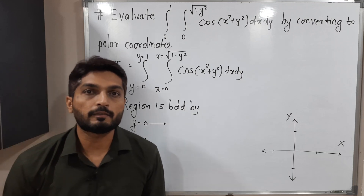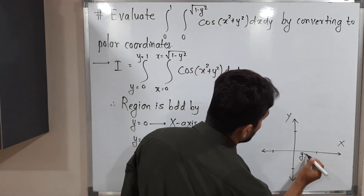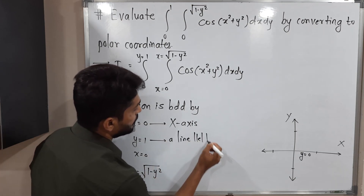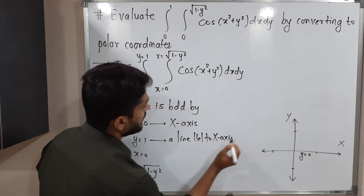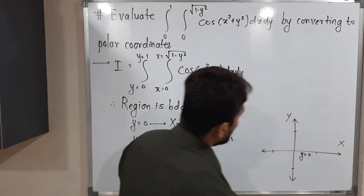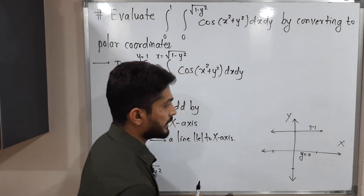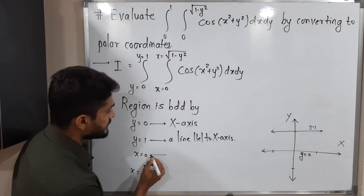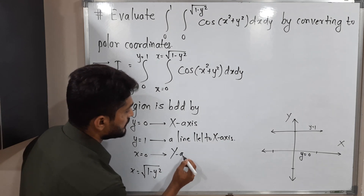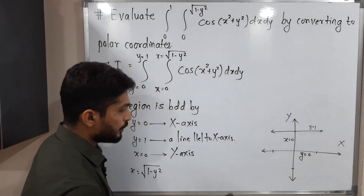Y=0 is the equation of the X-axis. Y=1 is a line parallel to the X-axis passing through Y=1. X=0 is the equation of the Y-axis. So we have identified these three boundary lines on the graph.